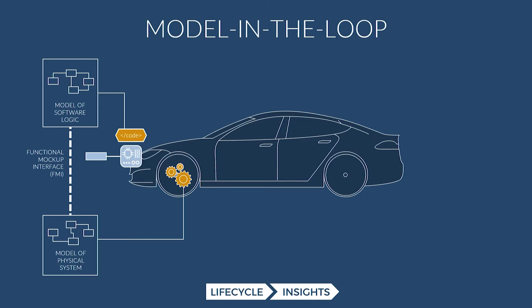The way Siemens and Mentor support this process is by using AIM-SIM to model up the physical aspects of the mechanical or actuated system. AIM-SIM is part of Simcenter — it's really good at 1D analyses, can be used for prototyping and testing, and even IoT and digital twin work. You connect your model of your software logic to the physical representation to verify that your software logic is correct, and then move on to the next phase.